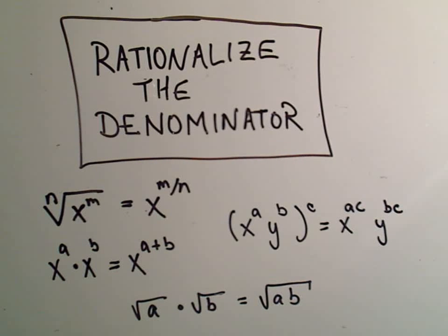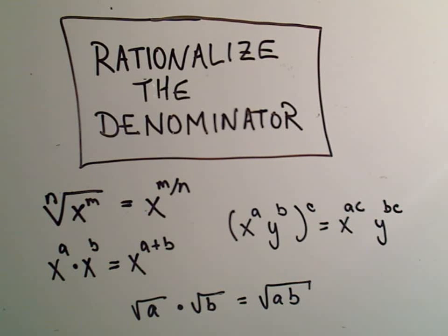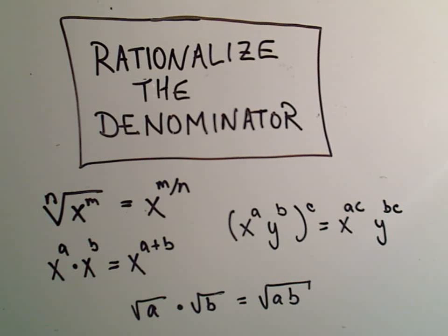In this video, I want to talk about how to rationalize the denominator of a fraction. To rationalize the denominator basically means if there are square roots, we have to get rid of them. That's all that means — or any type of root, not just square roots: cube roots, fourth roots, fifth roots, etc.